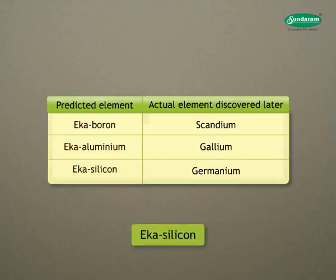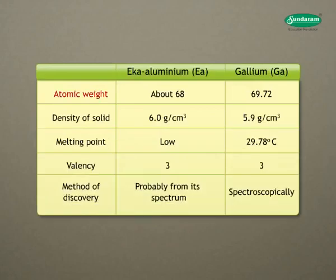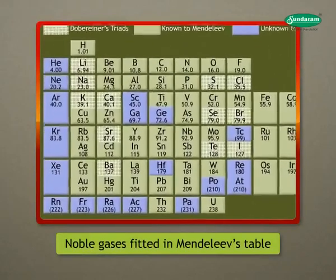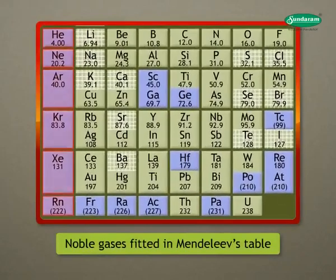Later, these predictions were found to be correct as shown in the table. We can see from the table that the atomic weight, density, valency, and oxide formula of eka-aluminium and gallium were correct. When noble gases were discovered later, they were placed in Mendeleev's periodic table without disturbing the positions of other elements.